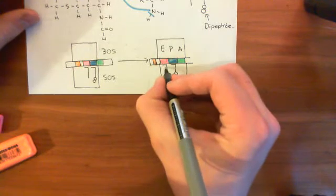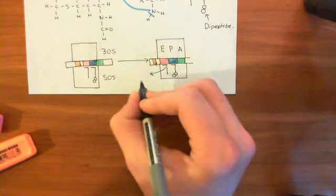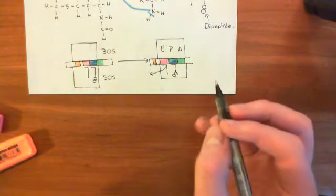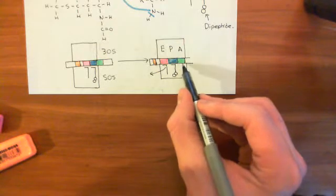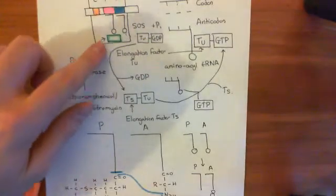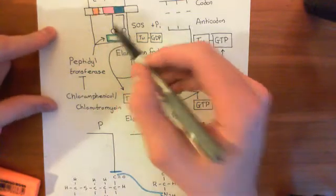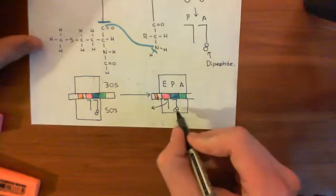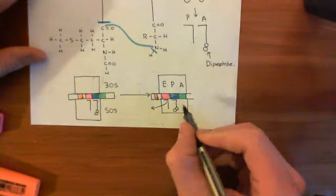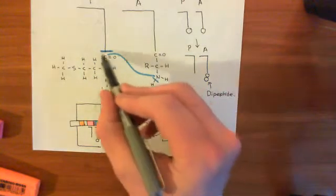So now what happens is this tRNA, which is now empty and has no amino acid attached to it, comes out of the E site. That's why it's called the exit site, because tRNAs exit from it. Another aminoacyl tRNA can come in and bind in the A site, and then this entire process can begin again. Peptidyl transferase can transfer both these amino acids onto the third one.